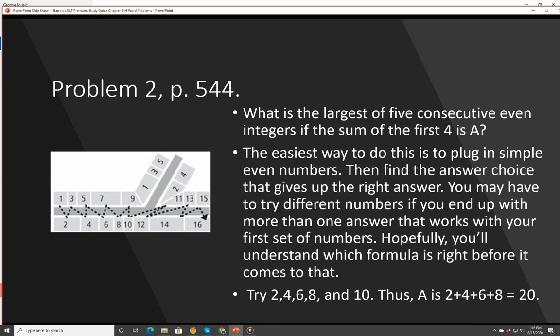Let's try 2, 4, 6, 8, and 10. Thus, A is equal to the sum of the first four, which is 2 plus 4 plus 6 plus 8. You can do this little neat trick: 2 plus 8 is 10, 4 plus 6 is 10, 10 plus 10 is 20. So 2 plus 4 plus 6 plus 8 is 20.